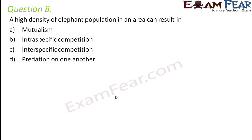Question number 8. A high density of elephant population in an area can result in mutualism, intraspecific competition, interspecific competition, or predation on one another? All elephants belong to the same species and have the same resource requirements. When too many are in one area, they compete with each other — this is intraspecific competition, between organisms of the same species. So the correct option is B.